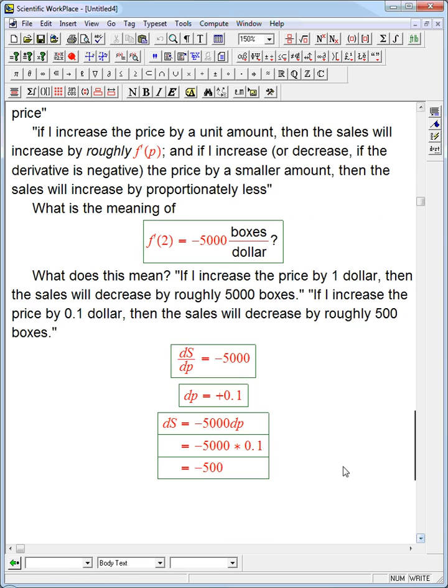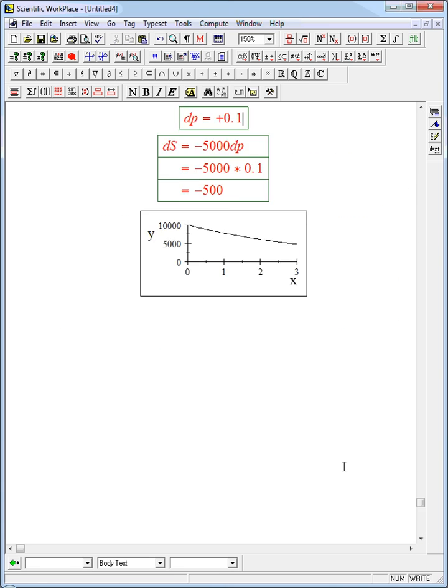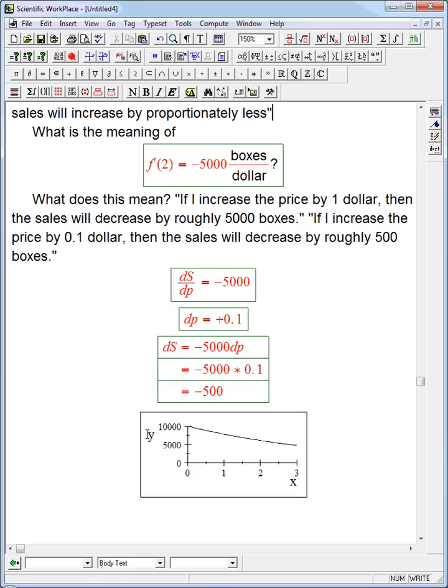So for example, I purposely didn't put a graph up here yet, but the graph might look like this. We might have a graph of sales, I forgot to change the letters, this would be S, this would be P. Of sales versus price that's like this, a downhill curve. And this minus 5,000 is the slope of that curve down here. It happens to be that the value is close to 5,000 at 2, but that's an accident. The idea is that if I wiggle the price a little bit, increase that by 0.1, then the sales are going to decrease. And I can predict roughly what that's going to do just on the basis of this one magic number.